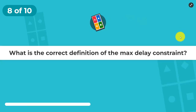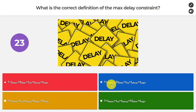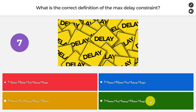Question number eight: what is the correct definition of the max delay constraint? Options: T minus Tskew minus Tjitter > Tcq + Tsetup + Tlogic; T < Tskew + Tjitter + Tcq + Tsetup + Tlogic; T plus Tskew > Tcq + Tsetup + Tlogic minus 2*Tjitter. The answer is T plus Tskew > Tcq + Tsetup + Tlogic minus 2*Tjitter.